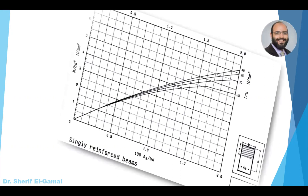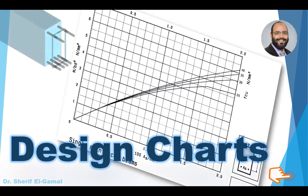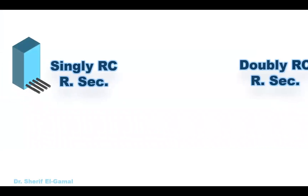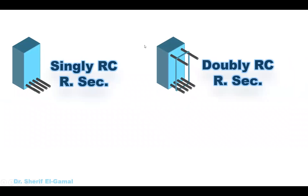Hello everyone and welcome to a new video on Reinforced Concrete Design. Within this video we'll be learning how to use design charts to design for singly and doubly reinforced concrete rectangular sections. There are two main design charts in the BS code for rectangular sections. The first is for the singly reinforced concrete rectangular section when you have only steel reinforcement in the tension side. The second type is for the doubly reinforced concrete rectangular section when you have tension steel and also compression steel.